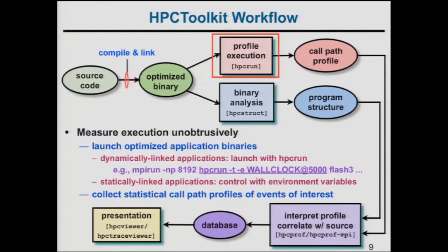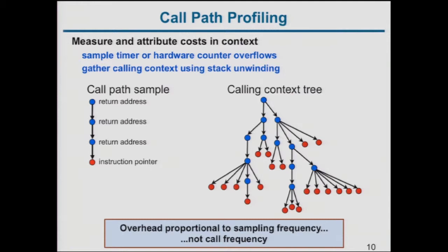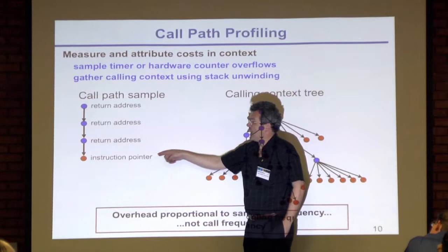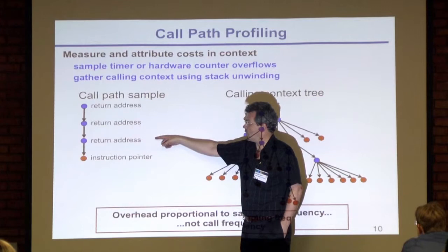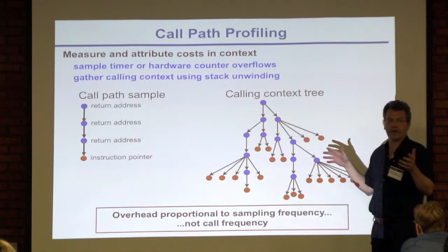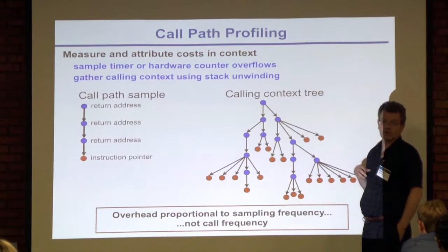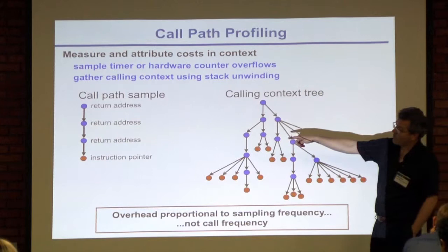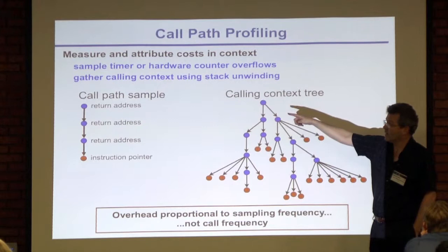When the program executes, you collect statistical call path profiles of events of interest. With call path profiling, you measure and attribute costs in context. You set up a timer or hardware counter to periodically overflow, triggering an interrupt. We find out where you are — say, you're in routine C, called from B, called from A, called from main. That tells exactly where the costs were incurred. If you're in MPI wait, knowing which MPI wait is a problem requires the calling context.